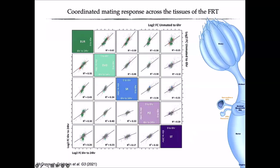Despite the tissues having really distinct transcriptional profiles, after mating we do see coordinated gene expression dynamics. This shows pairwise correlations of gene expression changes: in the top half, log2 fold change from unmated to the first time point after mating; in the bottom half, from six hours to 24 hours. Despite distinct transcriptional profiles, the changes tissues undergo in gene expression are correlated — suggesting some mechanism by which correlated changes in post-mating responses occur.